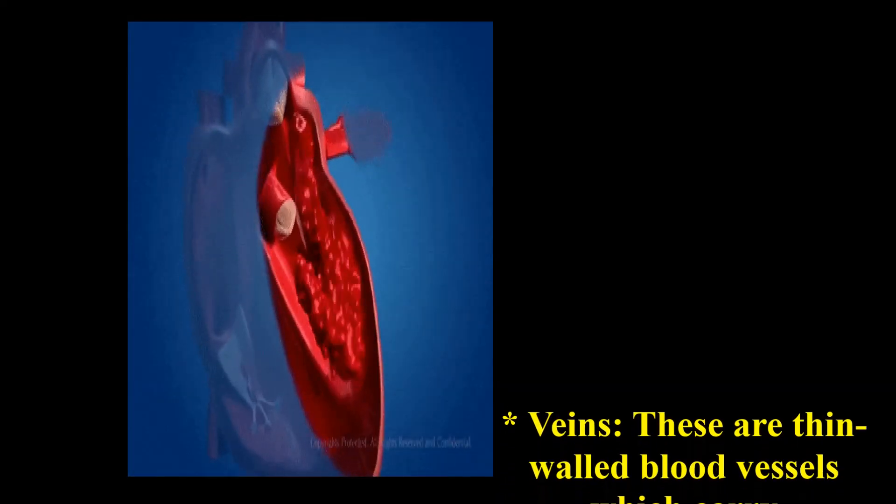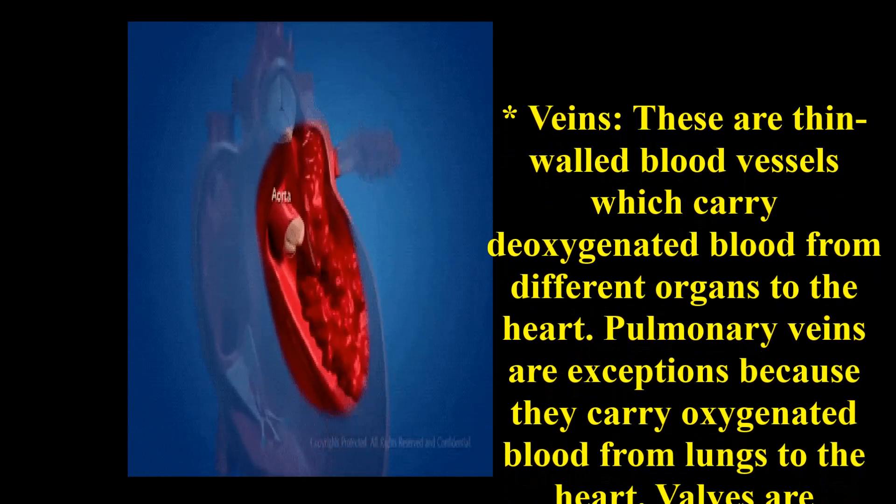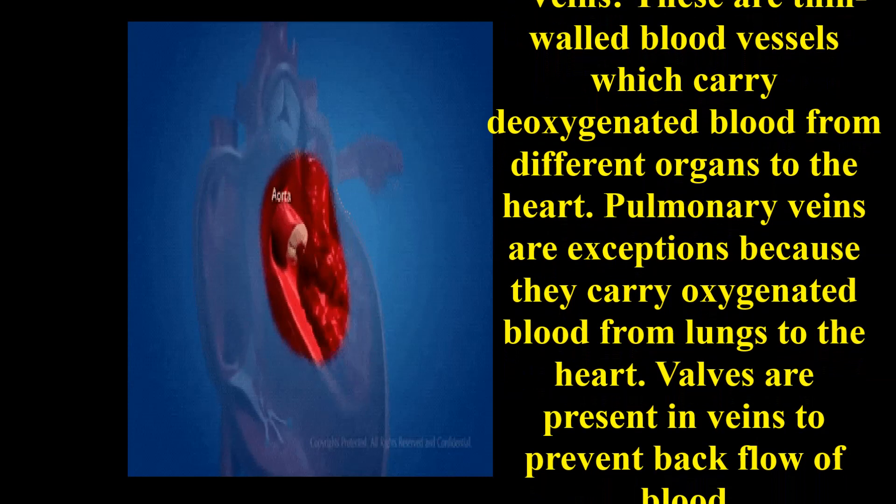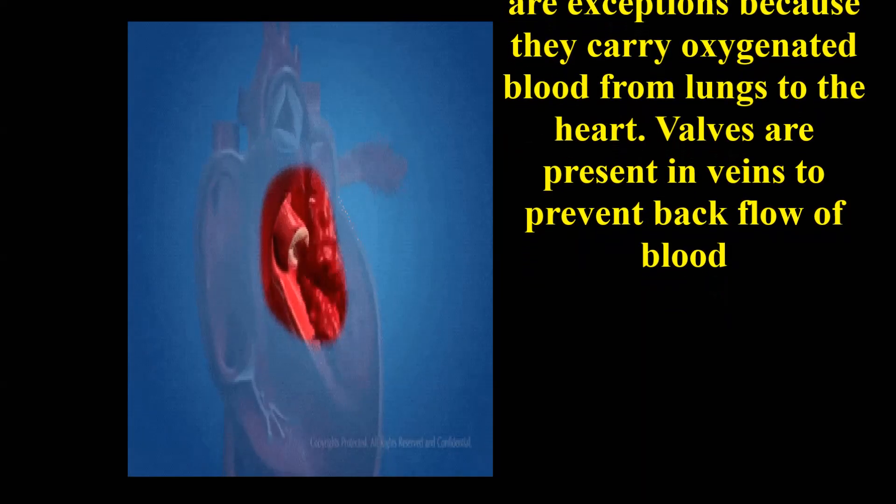Veins are thin-walled blood vessels which carry deoxygenated blood from different organs to the heart. Pulmonary veins are exceptions because they carry oxygenated blood from lungs to the heart.